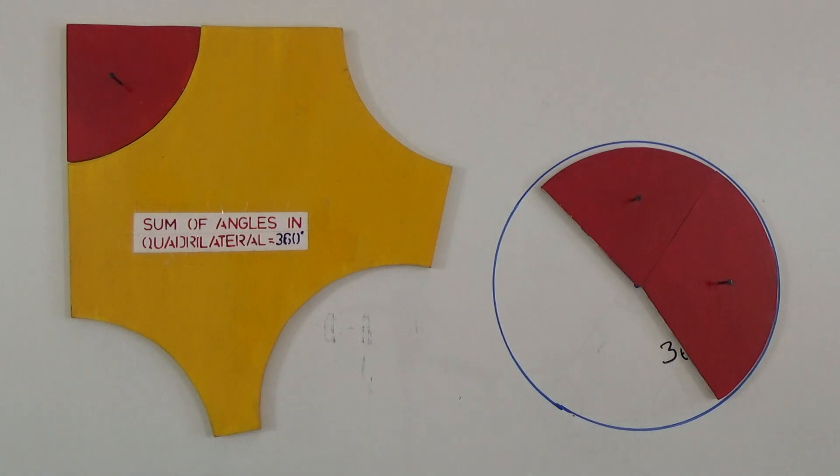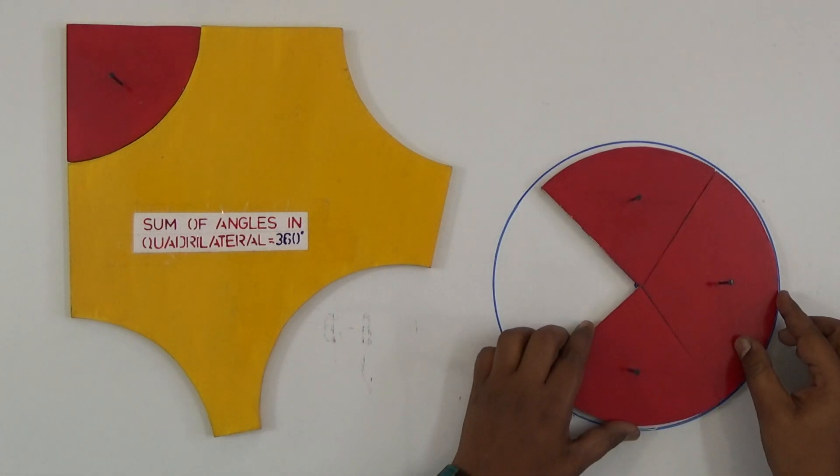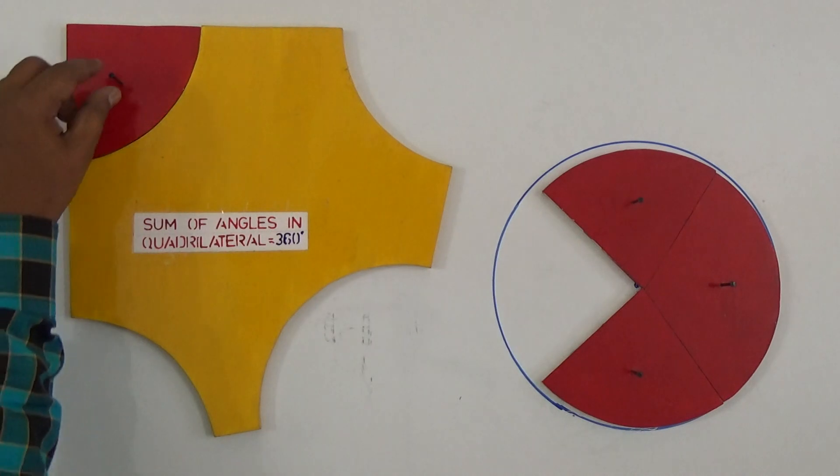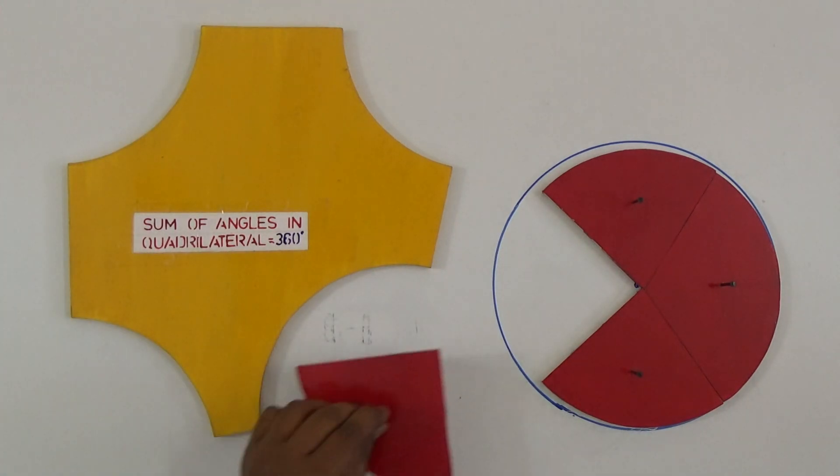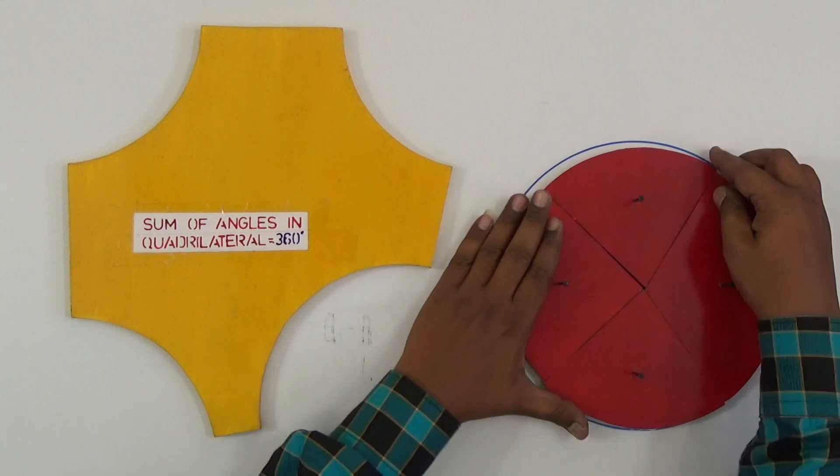Angle three. And this is angle four in a quadrilateral. Just observe this clearly now.